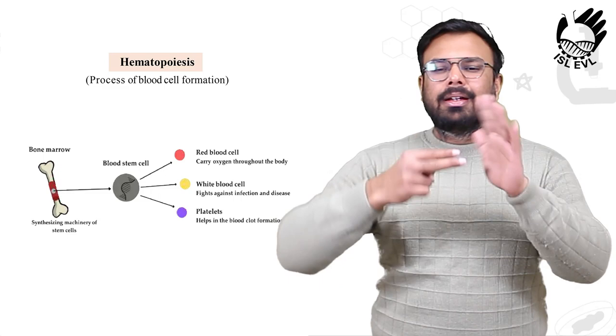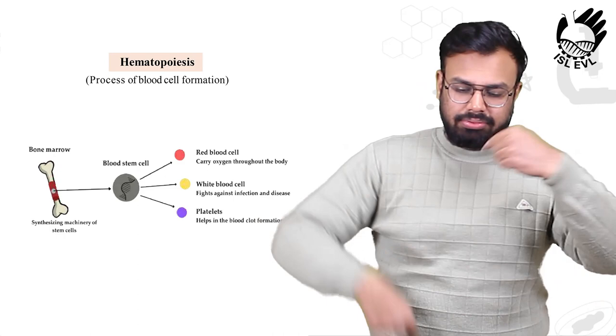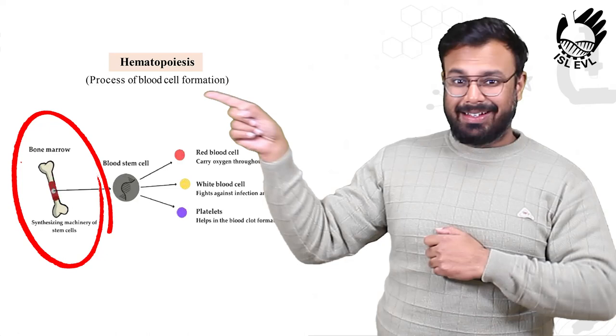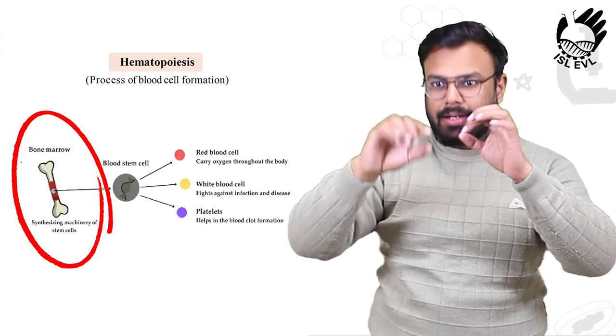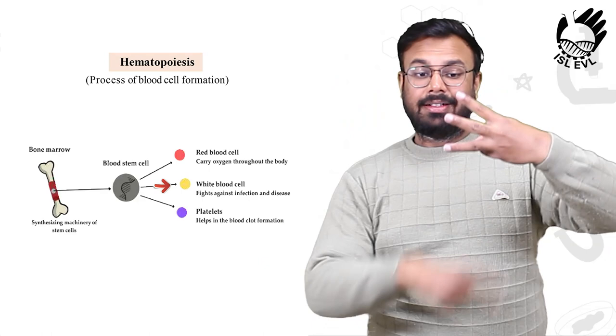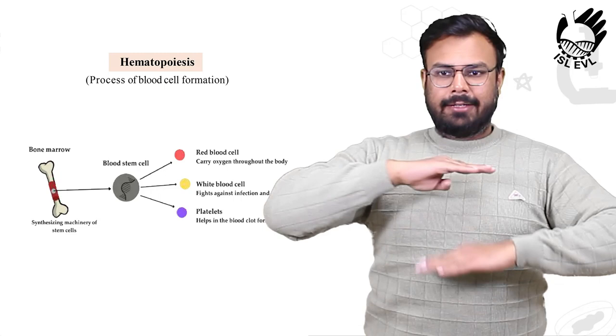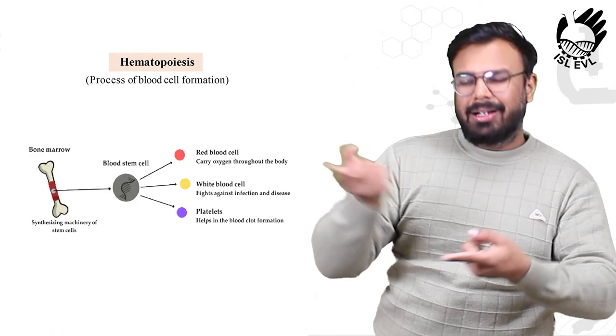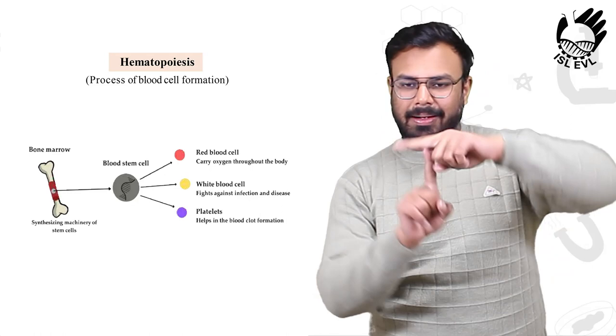Background: Hematopoiesis is the process of blood cell formation. In the bone marrow, there is a synthesizing machinery of stem cells. There are three types of blood stem cells: First, red blood cells. Second, white blood cells. And platelets. RBC carry oxygen throughout the body. WBC fight against infection and disease. Platelets help in blood clot formation.